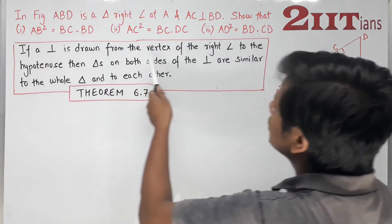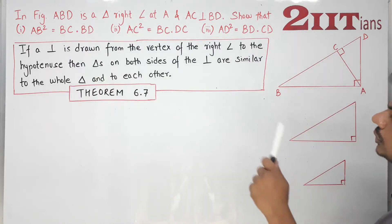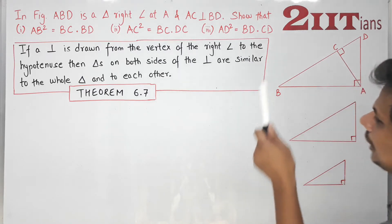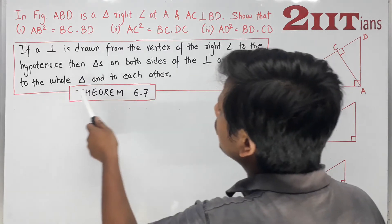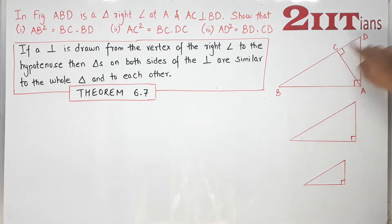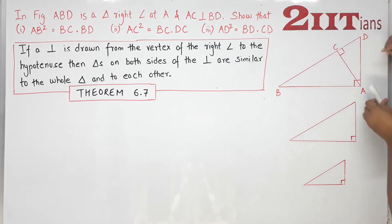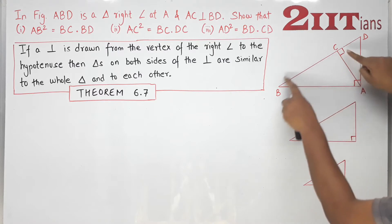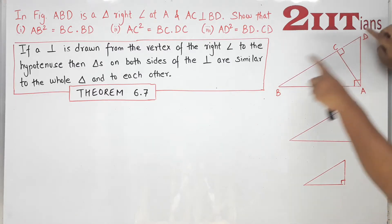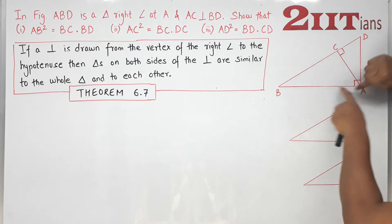If a perpendicular is drawn from the vertex of the right angle to the hypotenuse, then the triangles on both sides of the perpendicular are similar to the whole triangle and to each other. So this is what is written — if there is a right angle triangle, if there is a 90 degree vertex, a perpendicular is drawn to the hypotenuse from the right angle.